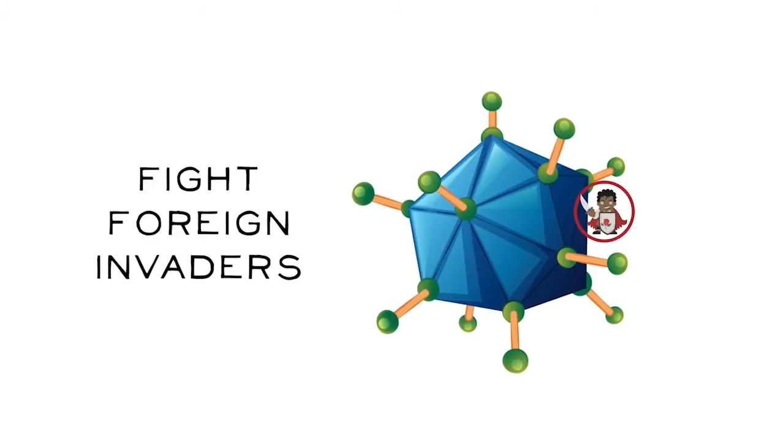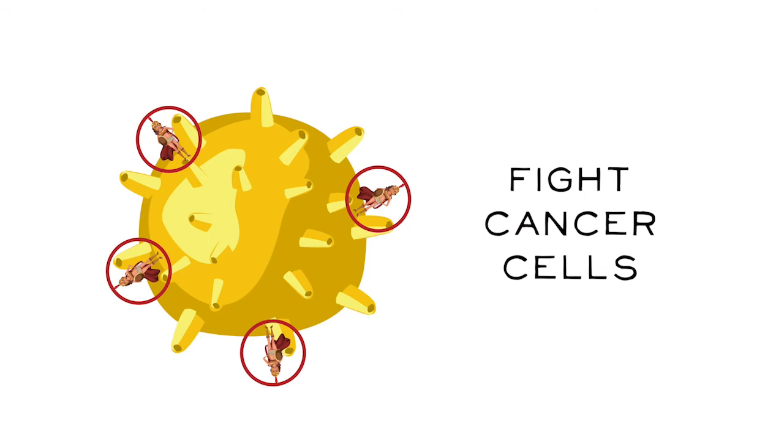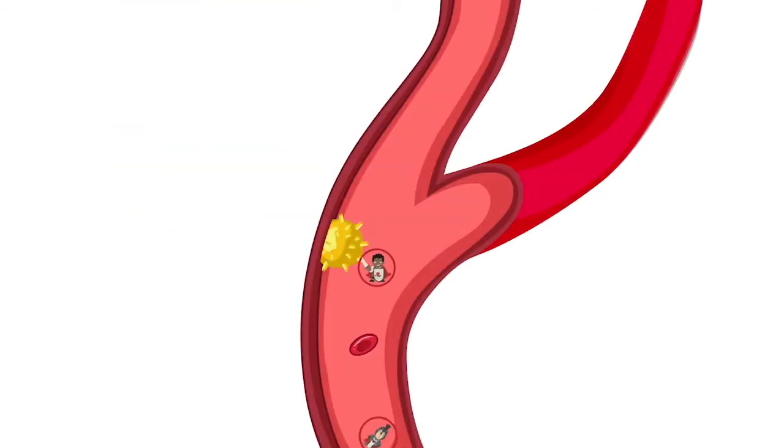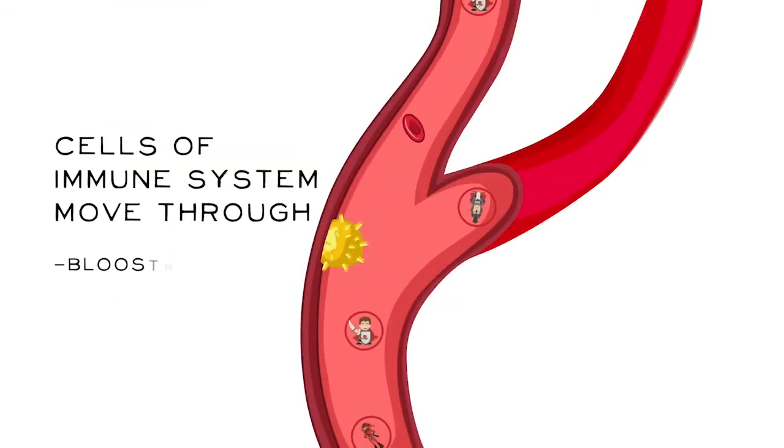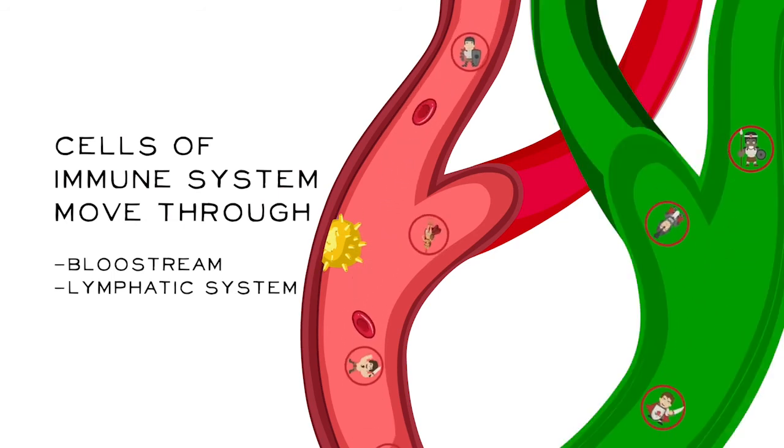do. Some of them fight foreign invaders and others find cancer cells. The cells of the immune system have two ways to get around the body: they can float in the bloodstream or enter the lymphatic system, a complex system